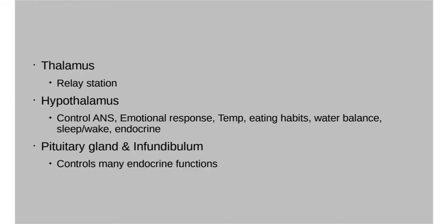The thalamus is often called the relay station of the brain. As information comes into the brain from your spinal cord, it needs to reach different locations depending on what sort of information it is. The thalamus directs all incoming information to the right portion of the brain, and also directs information leaving the brain. Anything coming into or exiting the brain passes through the thalamus.